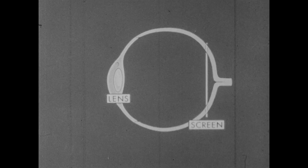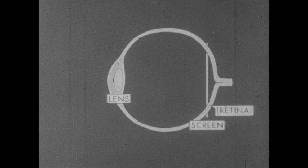In fact, our simple camera is very similar to the human eye. It too has a lens and a kind of screen called the retina on which visual images are formed.